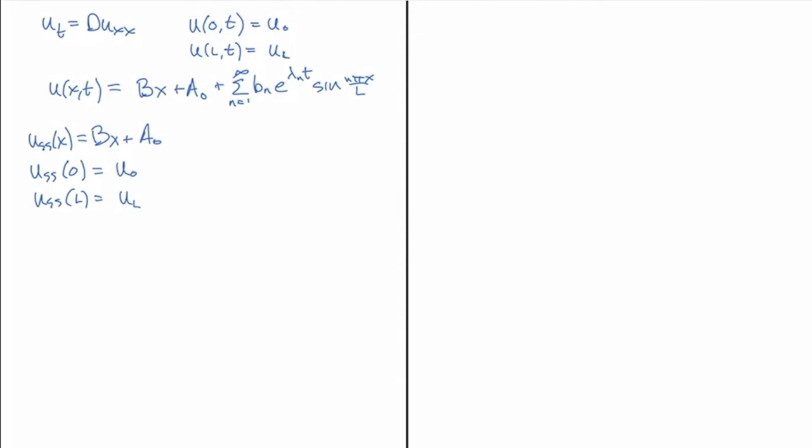So what does that mean? That means that we have to choose now here, we're going to have B times zero plus A_0. So A_0 is just going to be U_0. And then now we have our A_0. Now I have B times L plus U_0. And then that means that I have to choose B equal to U_L minus U_0 all divided by L.